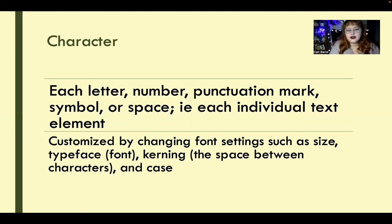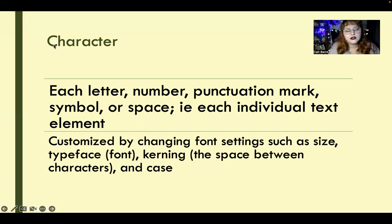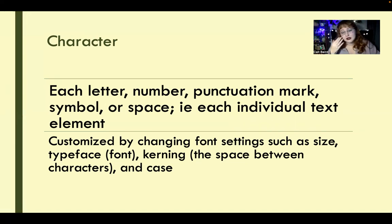A character is each individual text element — that could be a letter, a number, a symbol, a punctuation mark, a space — basically anything. If there's a key for it and you can type it, it's probably a character. The word 'character' itself has nine characters in it. You customize characters by changing the size, the font, the spacing between them — which is called kerning — and the case: all caps, small caps, sentence case, lowercase, and so on.